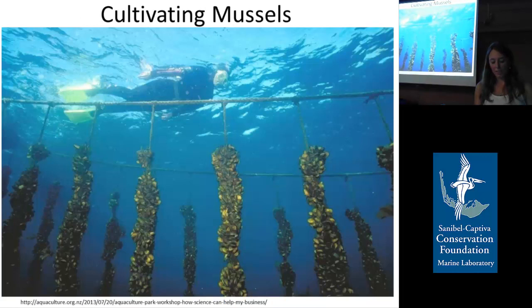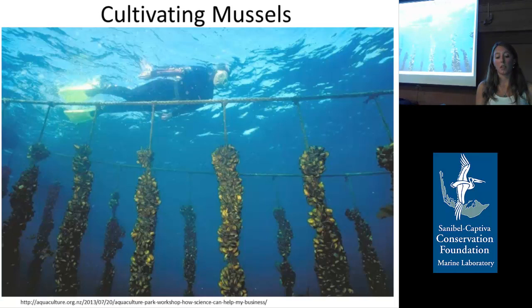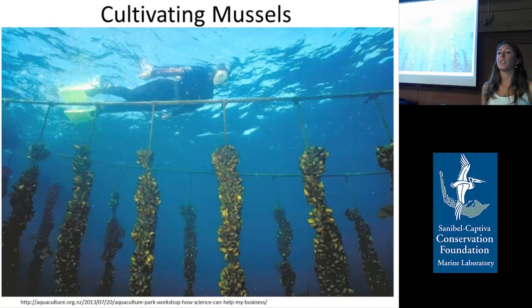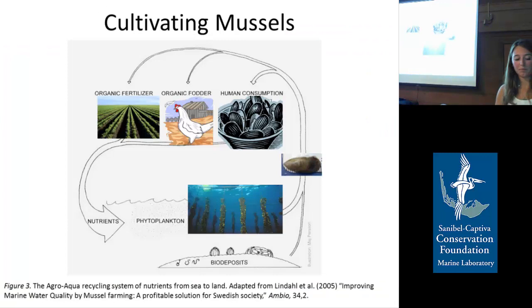Mussel cultivation is currently being considered for improving water clarity and water quality in both marine and freshwater environments. It's been proposed to use harvestable species — like in Sweden they harvest blue mussels — and also maybe using non-native species in lakes that have zebra mussels, which despite a very negative reputation also improve water clarity in a lot of lakes and reservoirs. People are trying to think of a way to turn something negative into a positive.